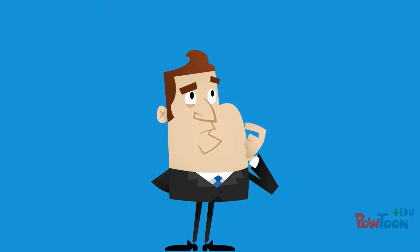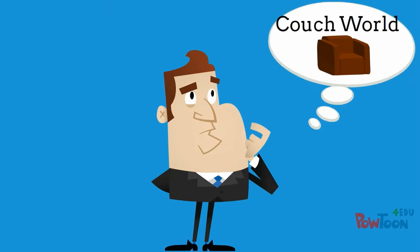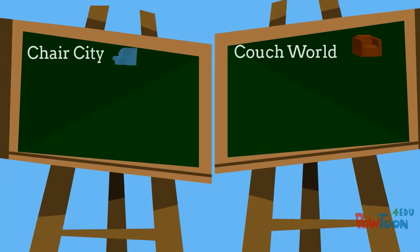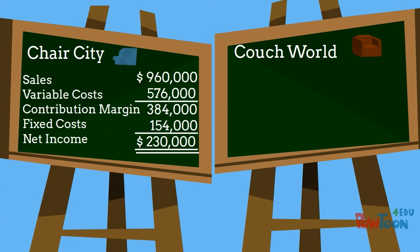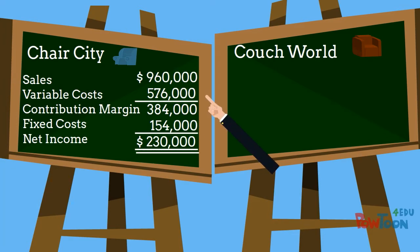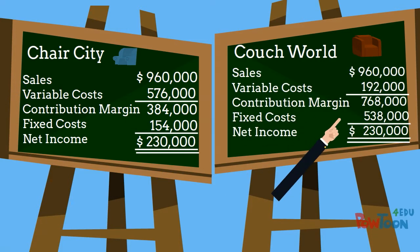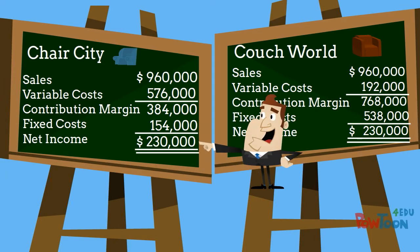Here we have two furniture companies: Couchworld and Chair City. While both create furniture, they have a very different cost structure. By looking at their CVP income statements, we can see that Chair City uses a more labor-intensive production with more variable costs, while Couchworld has a more automated system with more fixed costs in comparison to variable — while ultimately they both have the same amount of net income.